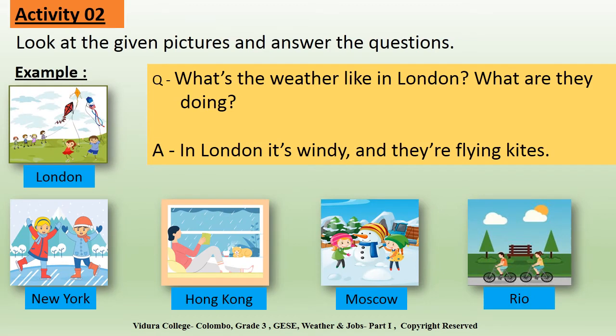Let's do another small activity. Look at the given pictures and answer the questions. Let's look at the example. The question is, what's the weather like in London? The answer is, in London, it's windy and they are flying kites. Now, it's your turn to answer the questions. First one, what's the weather like in New York? What are they doing? Second one, what's the weather like in Hong Kong? What are they doing? Third one, what's the weather like in Moscow? What are they doing? Last one, what's the weather like in Rio? What are they doing?